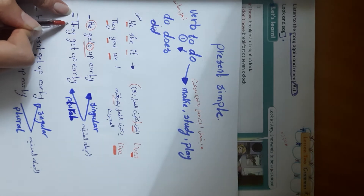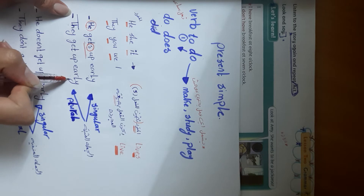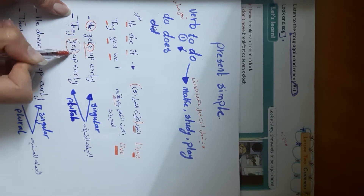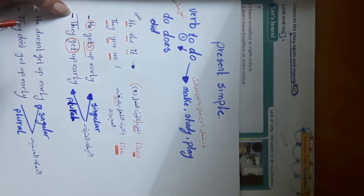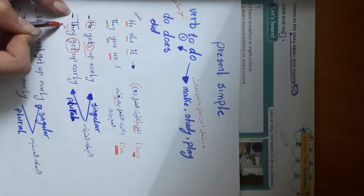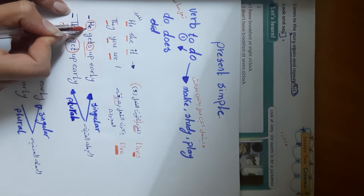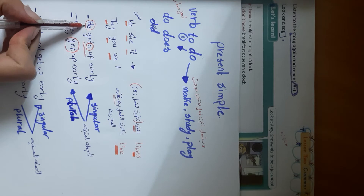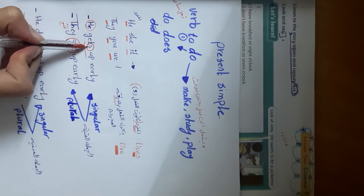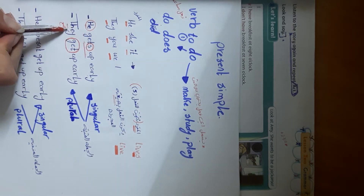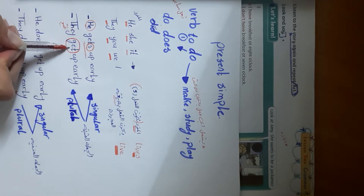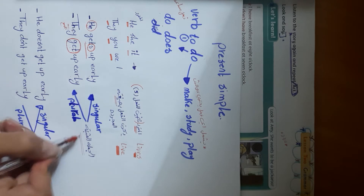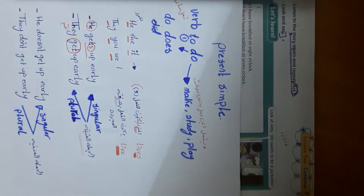For the plural — 'they get up early' — we keep 'get' alone without any addition. Because the subject is plural, we leave the verb in its base infinitive form. So: singular subject → add -es to the verb; plural subject → verb stays in base form.